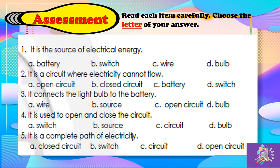Number 4, it is used to open and close the circuit. A. Switch, B. Source, C. Electric circuit, or D. Bulb. Number 5, it is a complete path of electricity. A. Closed circuit, B. Switch, C. Circuit, or D. Open circuit. Are you ready to answer?